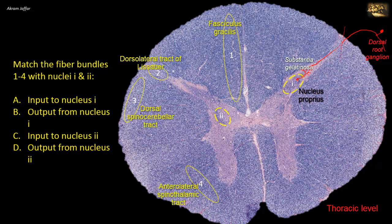Neurons of nucleus proprius give rise to axons that cross the cord in the anterior white commissure and ascend in the contralateral spinothalamic tract. The input to the nucleus proprius comes from first-order neurons located in the dorsal root ganglion, and the output constitutes axons forming the anterior and lateral spinothalamic tract.